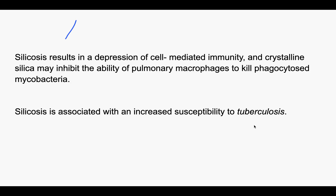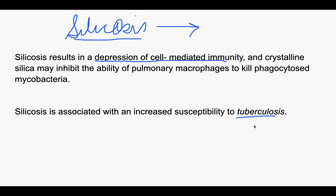Silicosis is also associated with tuberculosis. Silicosis increases the susceptibility to tuberculosis because it leads to depression of cell-mediated immunity and also inhibits the ability of pulmonary macrophages to kill mycobacteria. Because of these two reasons, silicosis is associated with an increased risk of tuberculosis.